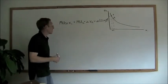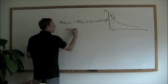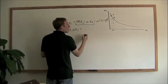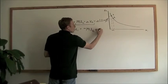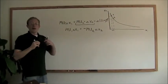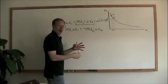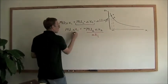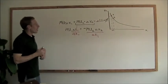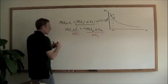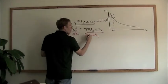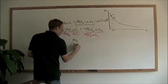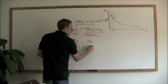Since the change in utility equals zero, we can rearrange mathematically. We set MU₁ times Δx1 equal to negative MU₂ times Δx2, keeping utility constant. Dividing both sides by Δx1, and then dividing each side by negative MU₂, those terms cancel out, and we're left with: MU₁ divided by negative MU₂ equals Δx2 over Δx1.